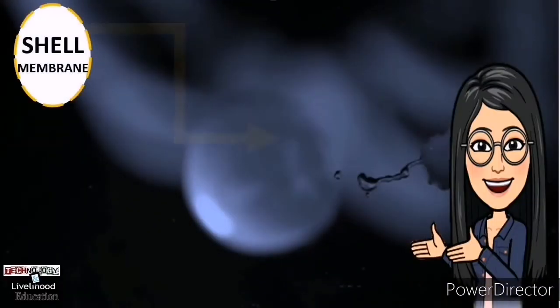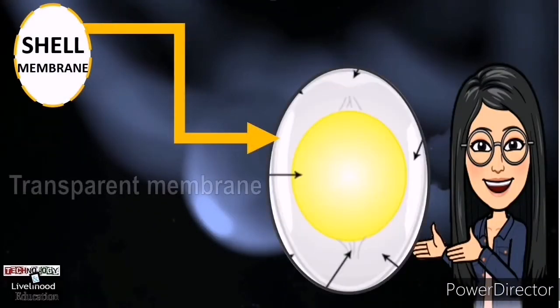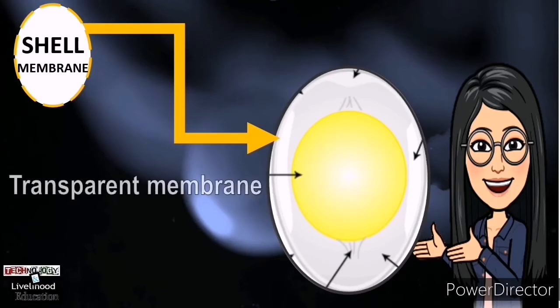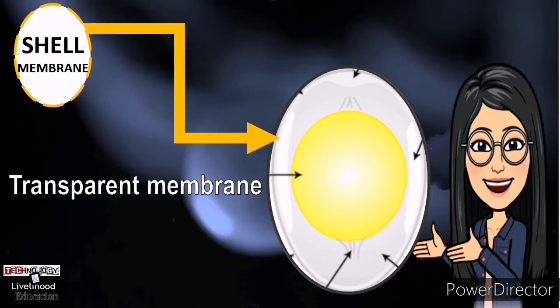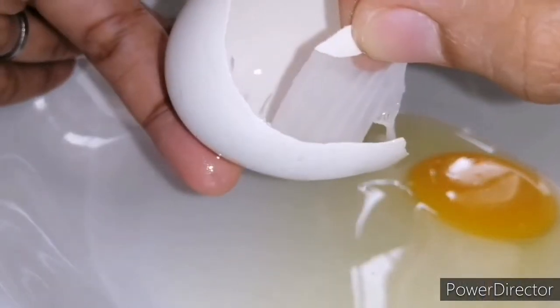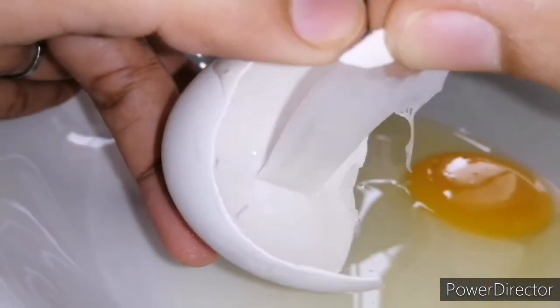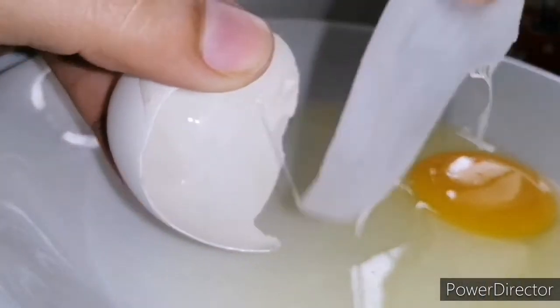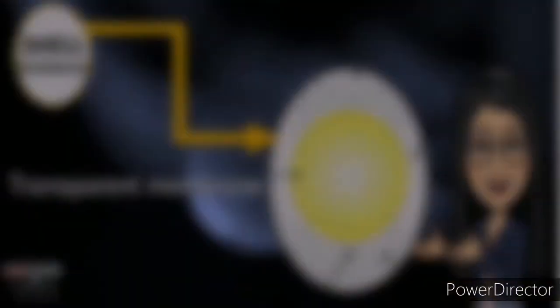Shell membrane — It is a transparent protein membrane that provides efficient defense against bacterial invasion. It protects the whole egg from breaking and keeps the egg fresh. The shell membrane is seen when peeling a hard-boiled egg.